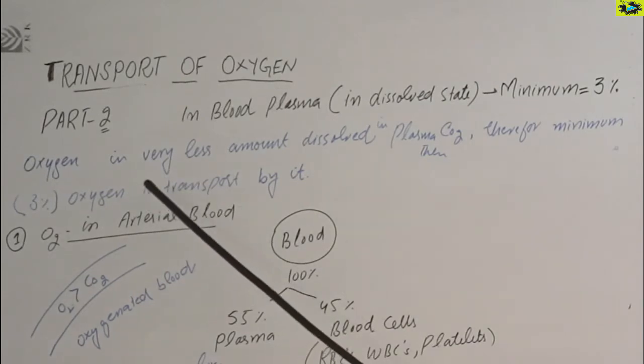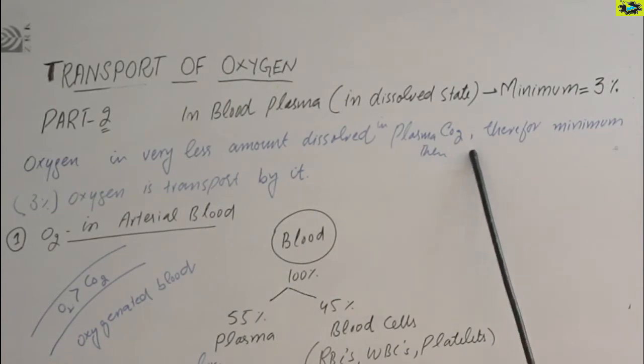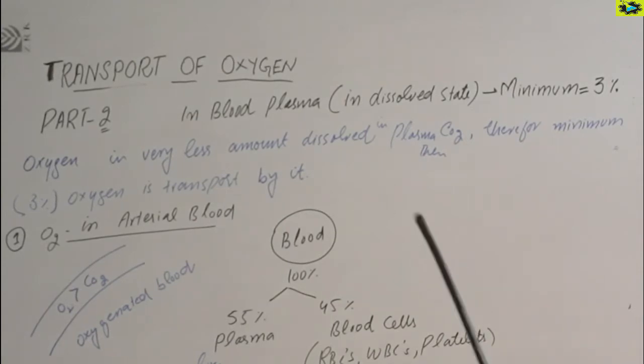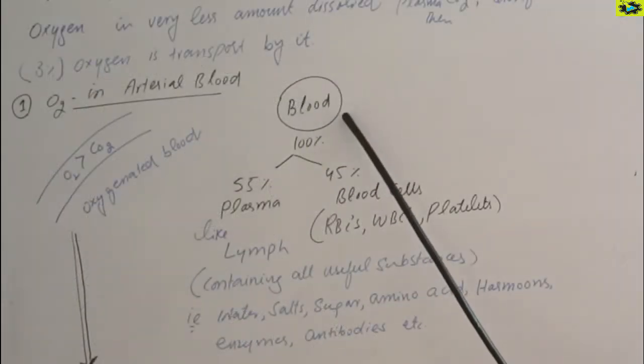The oxygen is very less amount dissolved in the blood plasma than carbon dioxide. Therefore oxygen is transported, only 3% oxygen is transported by it. As I have discussed this figure, so now how oxygen is transported by the arterial blood.